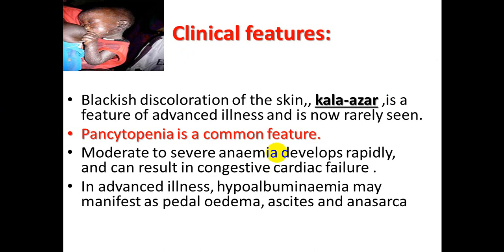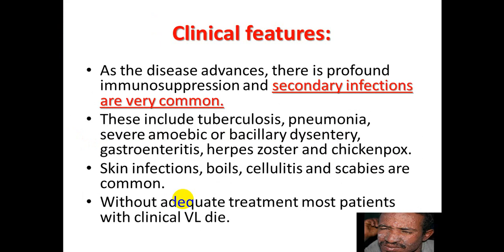Pancytopenia is a common feature, meaning low hemoglobin, low WBC, and low platelets. Moderate to severe anemia develops rapidly and can result in high cardiac output heart failure due to chronic anemia. In advanced disease, hypoalbuminemia may manifest as edema, ascites, and even anasarca — edema involving the entire body.